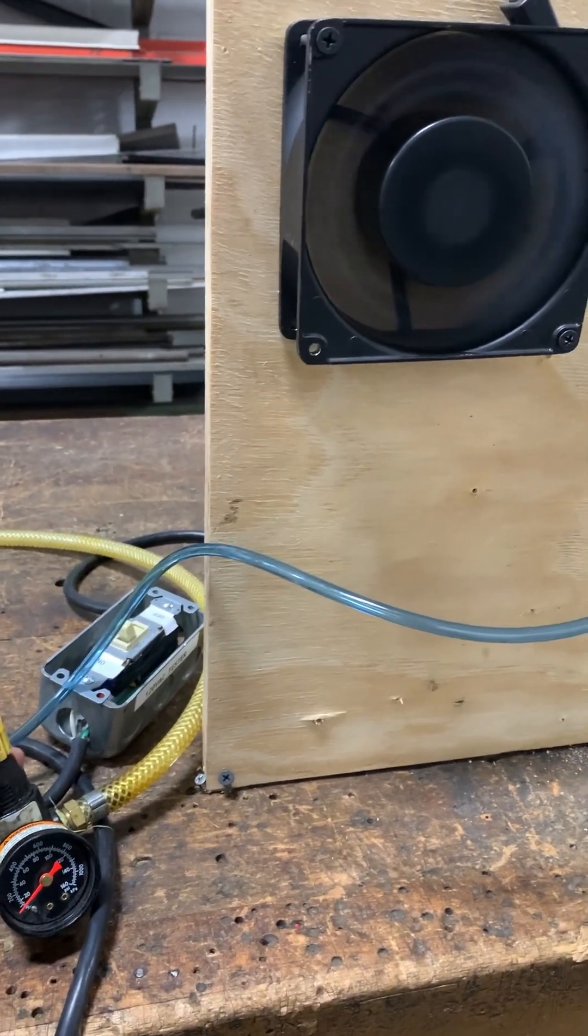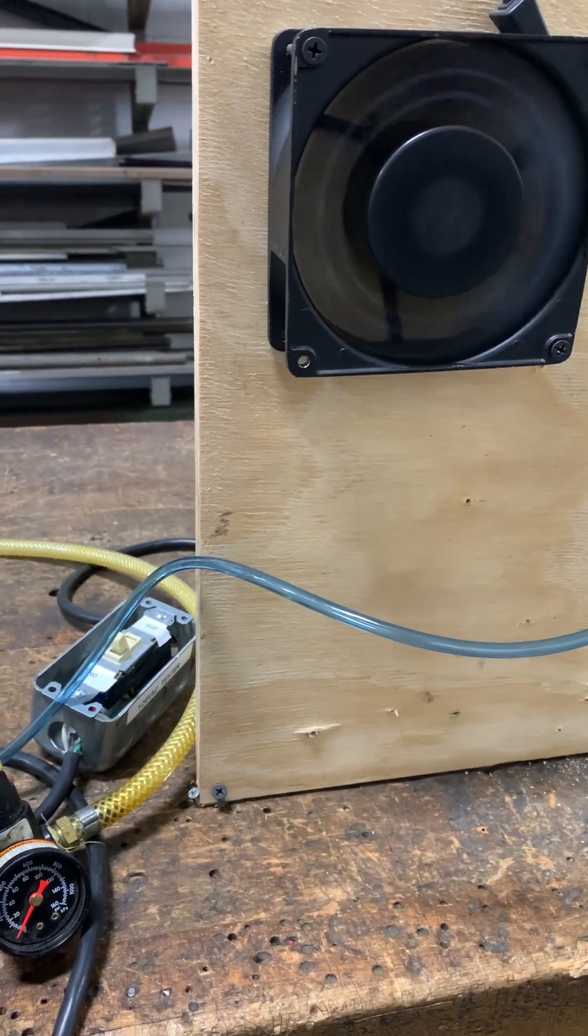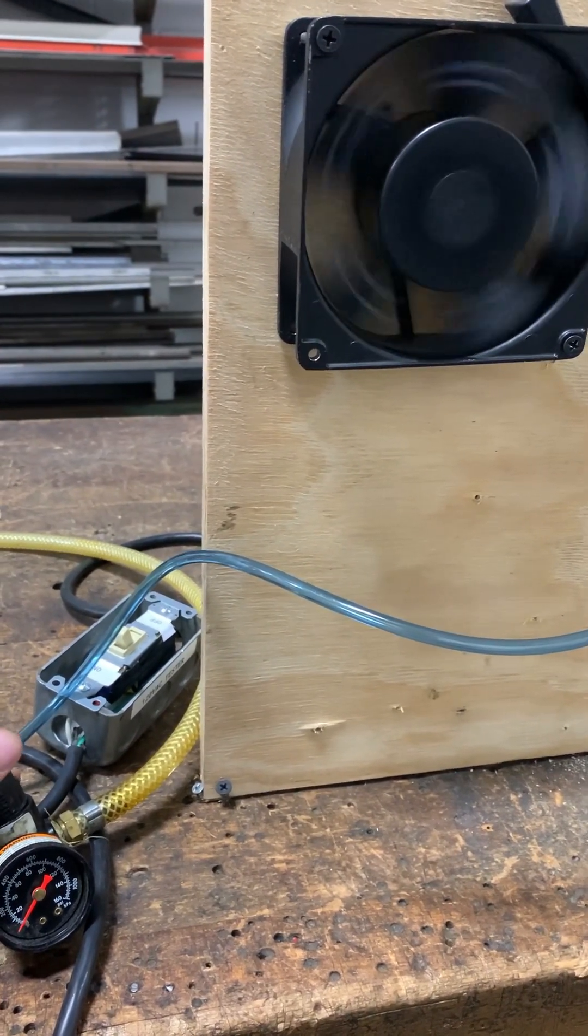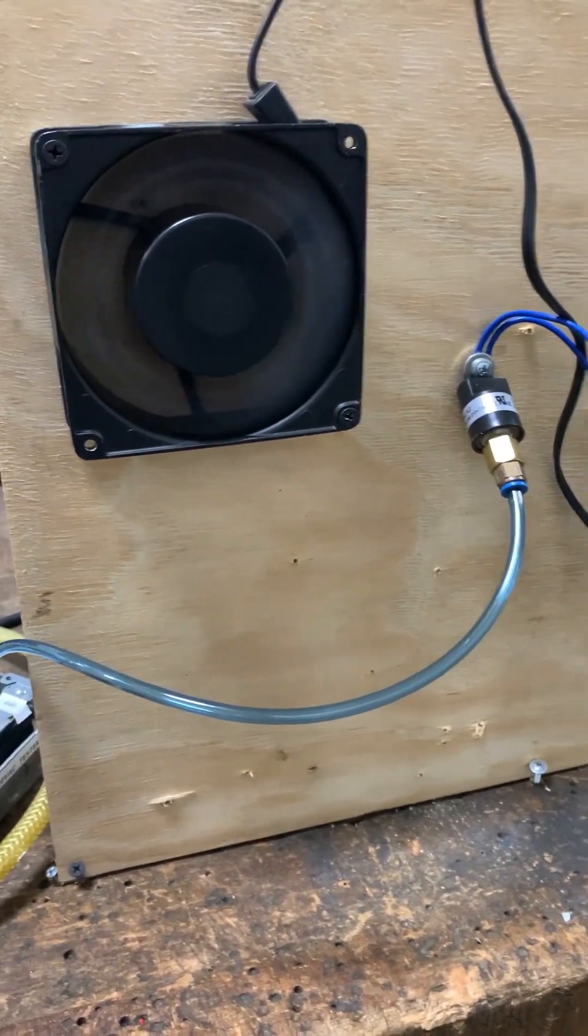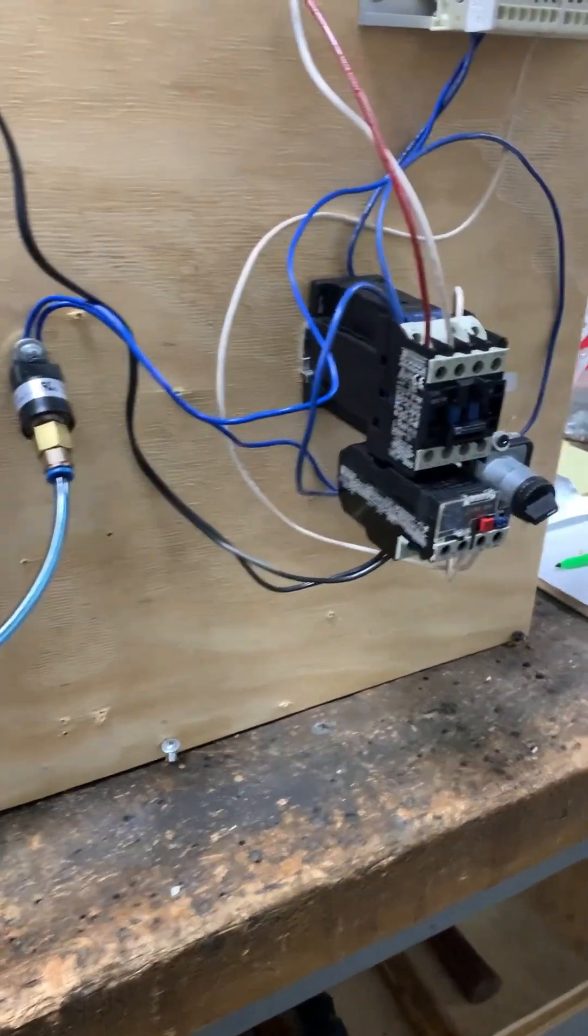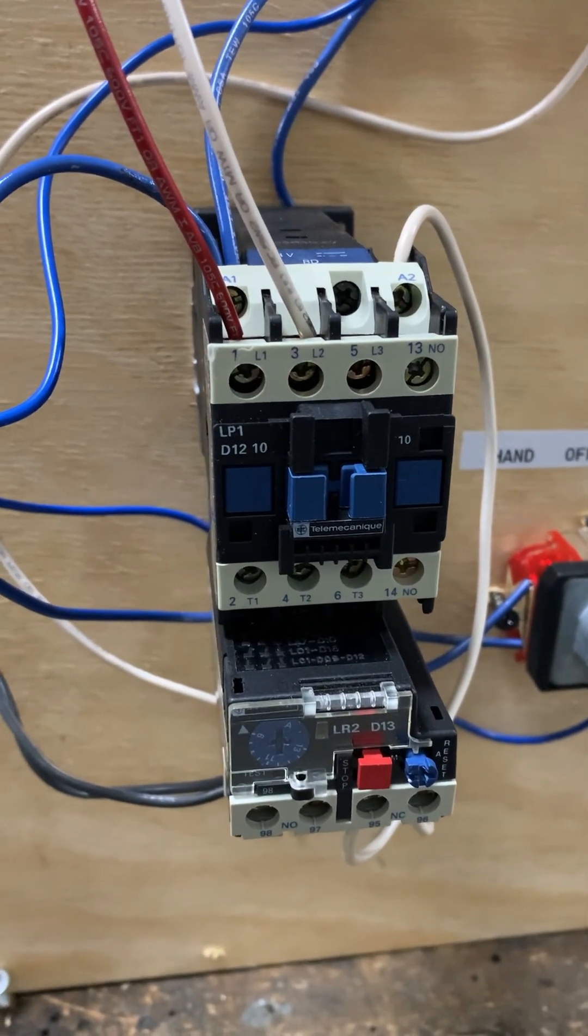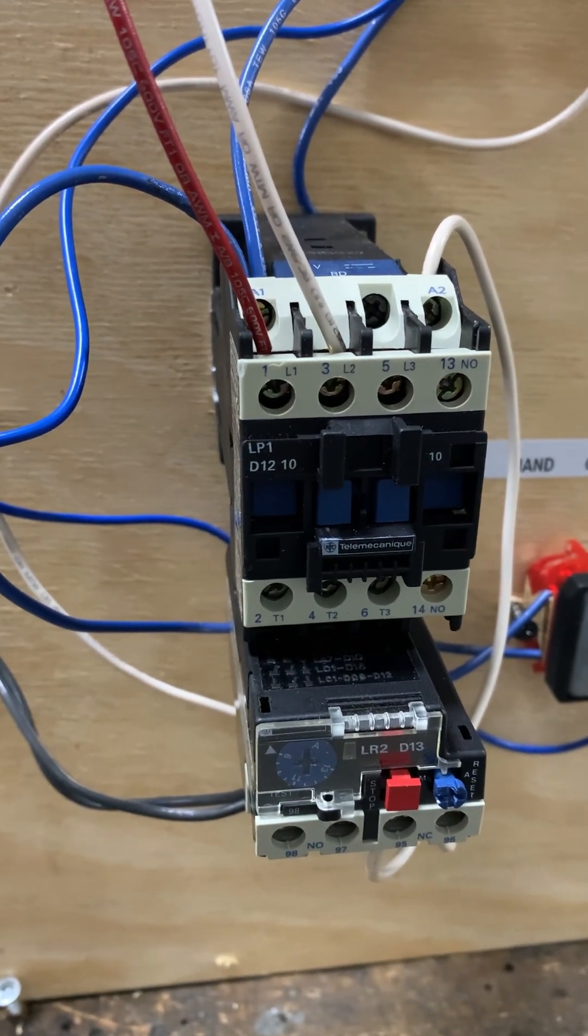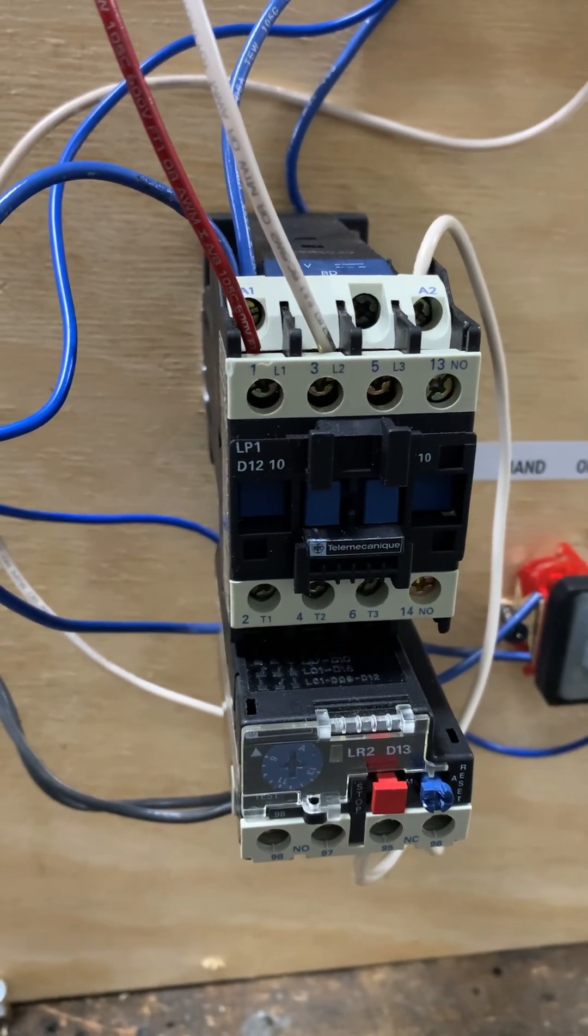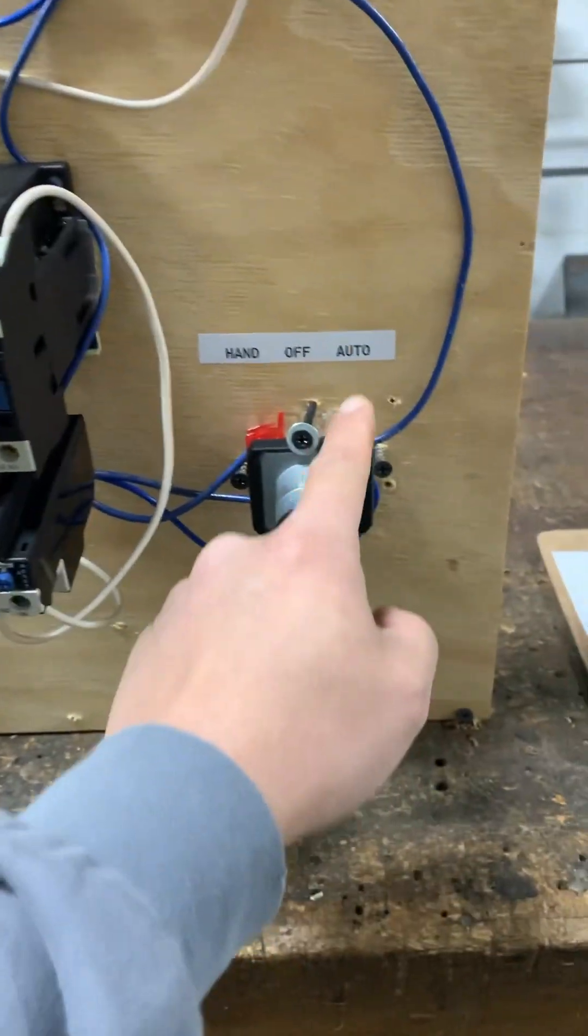Fan kicks on, lowers the pressure again. Kicks off. Fan is no longer running. Pressure system builds up again, it goes up again, it kicks right back on. And you can see here, it is all being controlled by the pressure switch. Pressure switch closes, contactor pulls in. Pressure drops, contactor opens back up, and our load stops.